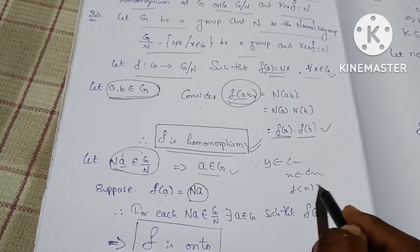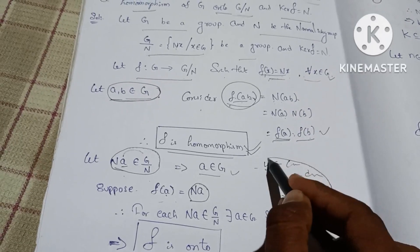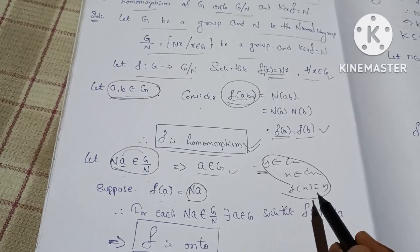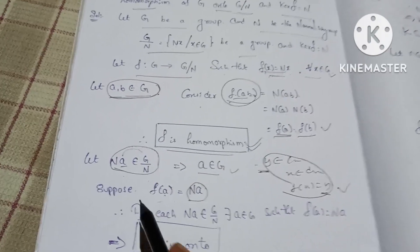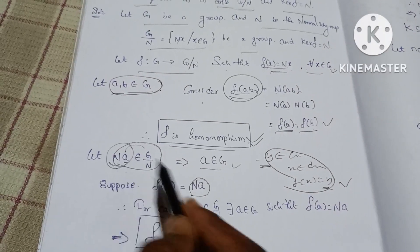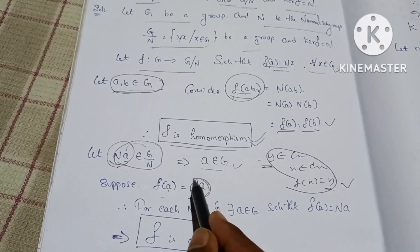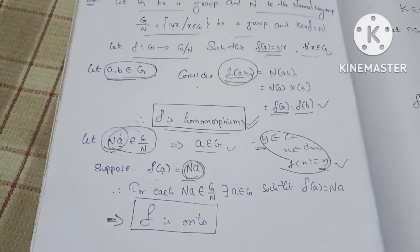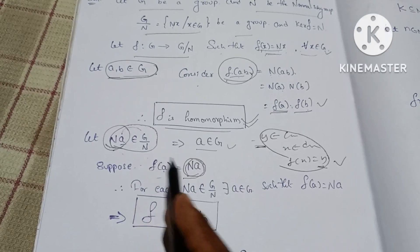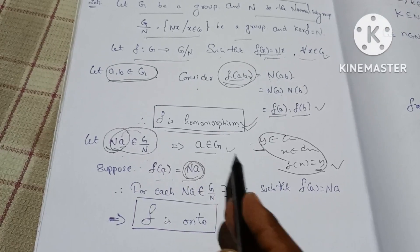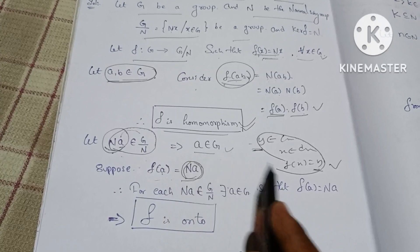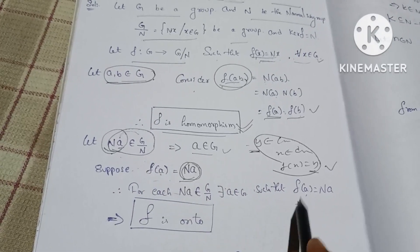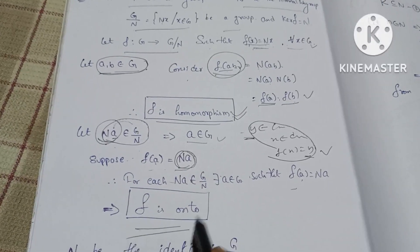Therefore F(x) = y, so F is onto. For each NA belonging to G/N, there exists A belonging to G such that F(A) = NA. This satisfies the onto condition, and therefore F is onto.